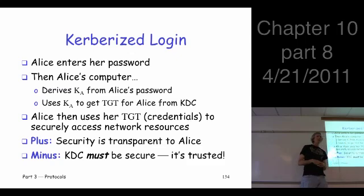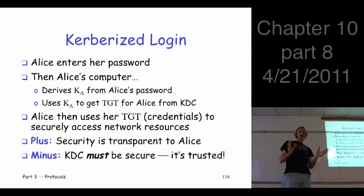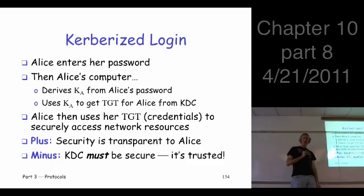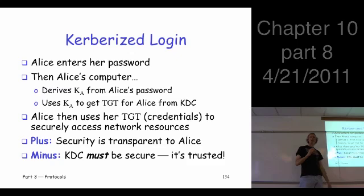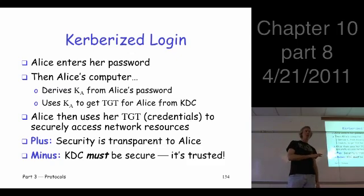So here's the idea. Alice logs into her computer. Her computer derives her key K_A. Who knows K_A? Alice and the KDC - it's the key she shares with the KDC, just based on her password. The computer hashes the password, gets K_A. The KDC already knows it. We use K_A to get our TGT, go to the KDC, get our credentials, and now we're ready to do something. A big plus is that it's transparent from Alice's perspective - she doesn't have to do anything special.